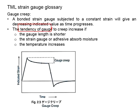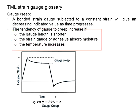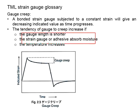The tendency of the gauge to creep increases if the gauge length is shorter, or if the strain gauge or adhesive absorbs moisture, or if the temperature increases. If you need to measure the strain of the specimen which is likely to be held constant over a period of time, probably you can take this into consideration. Use longer gauge length, do proper protection for moisture, and ensure the temperature is not an issue with the testing.